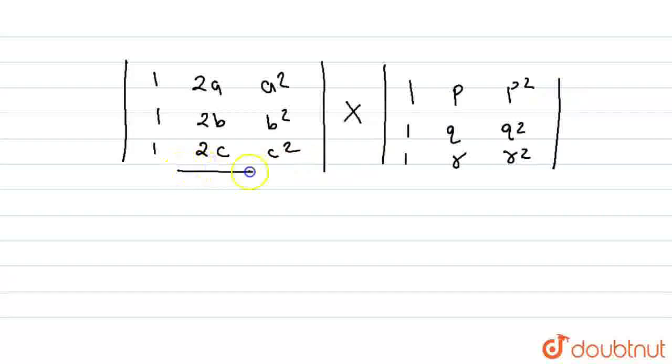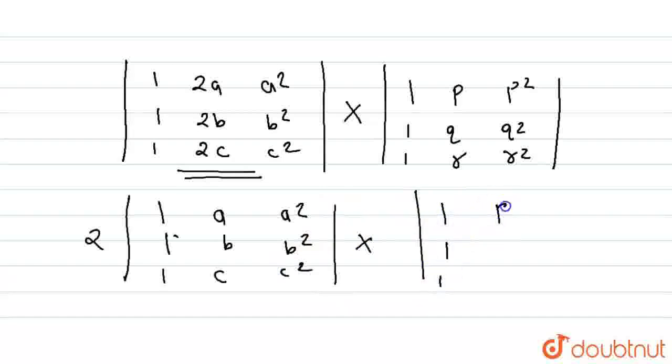Now we have to put these two values. Here we take 2 as a common. In determinants we can take from any row or column a number common. So 2 into this will become determinant: 1, 1, 1, a, b, c, a², b², c², multiply with determinant: 1, 1, 1, p, q, r, p², q², and r². Now we have to put these two values.